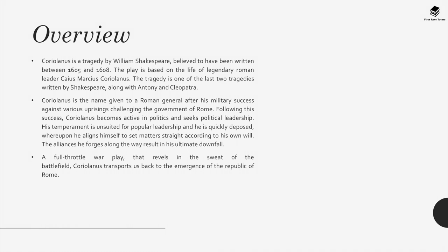Coriolanus is a tragedy by William Shakespeare believed to have been written between 1605 and 1608. The play is based on the life of legendary Roman leader Caius Martius Coriolanus. It is one of the last two tragedies written by Shakespeare, along with Antony and Cleopatra. Coriolanus is the name given to a Roman general after his military success against various uprisings challenging the government of Rome. Following his success, he becomes active in politics and seeks political leadership, but his temperament is unsuited for popular leadership and he is quickly deposed. The alliances he forges along the way result in his ultimate downfall.